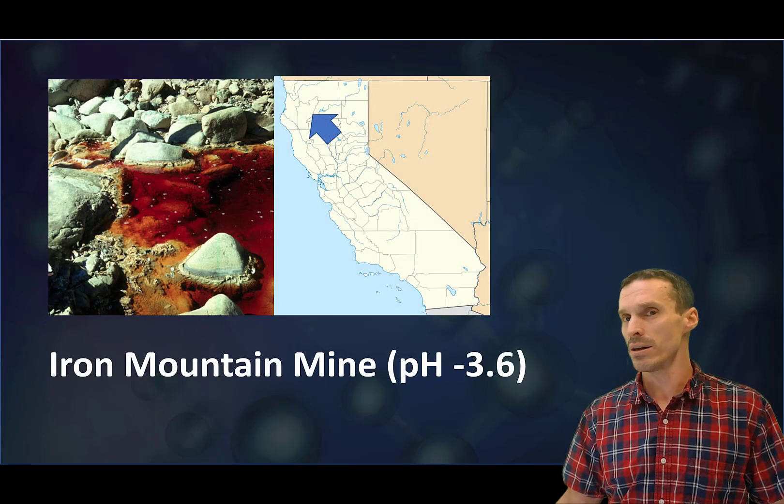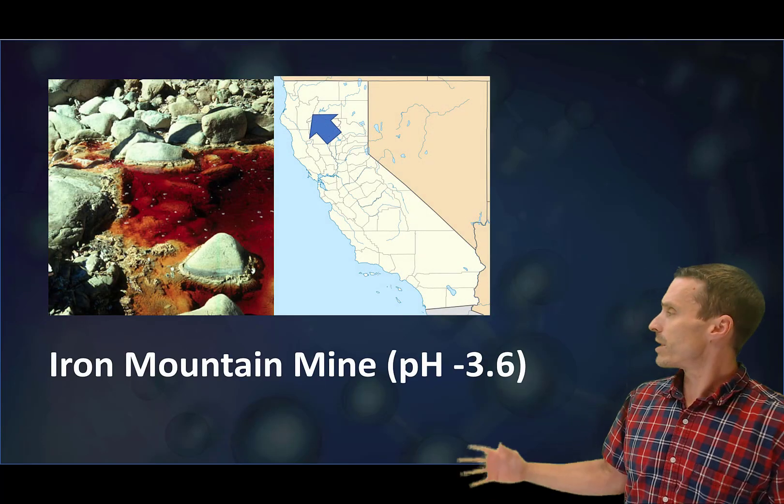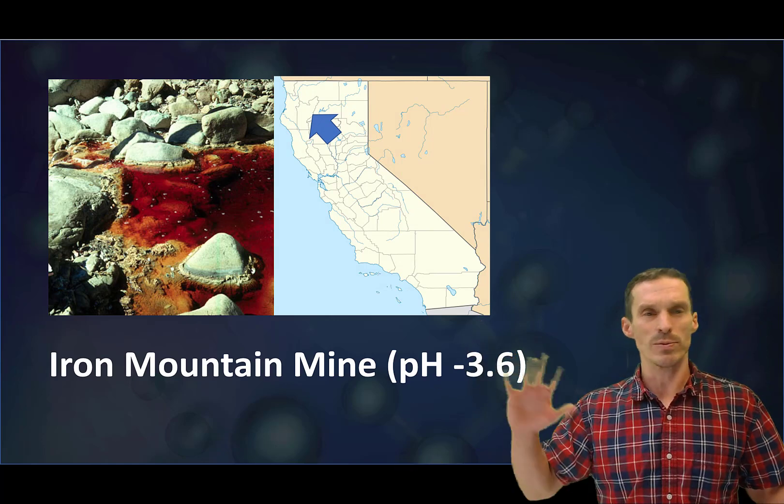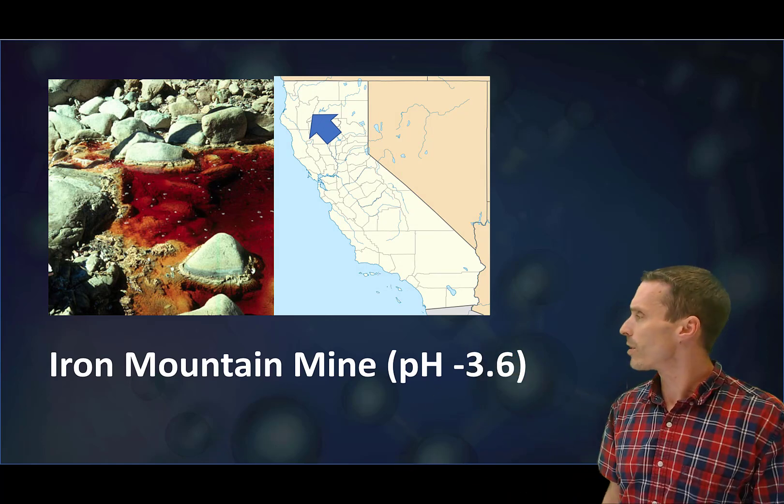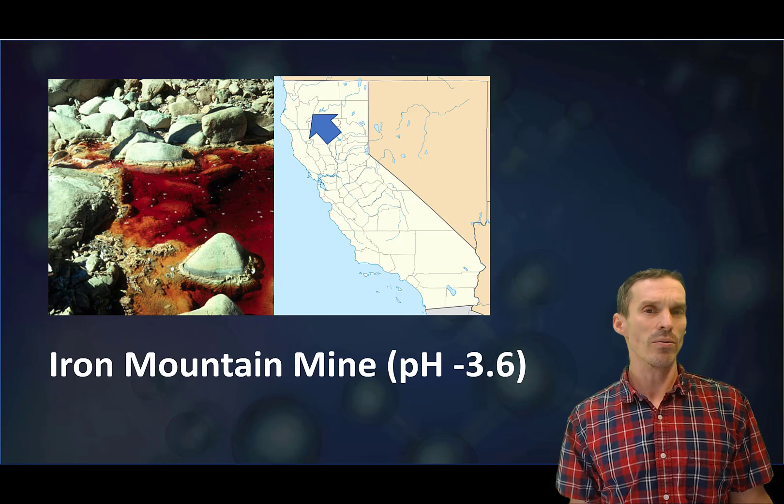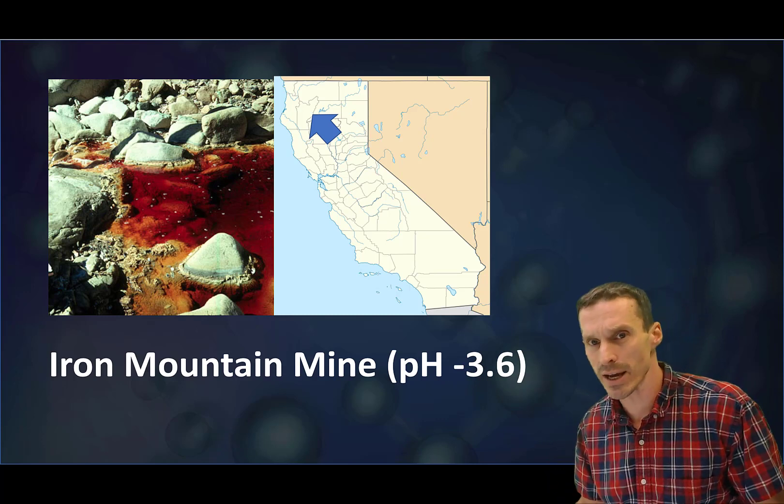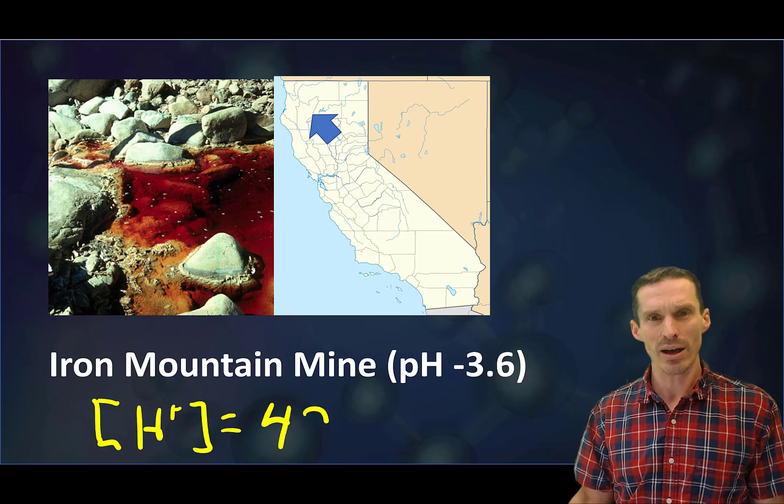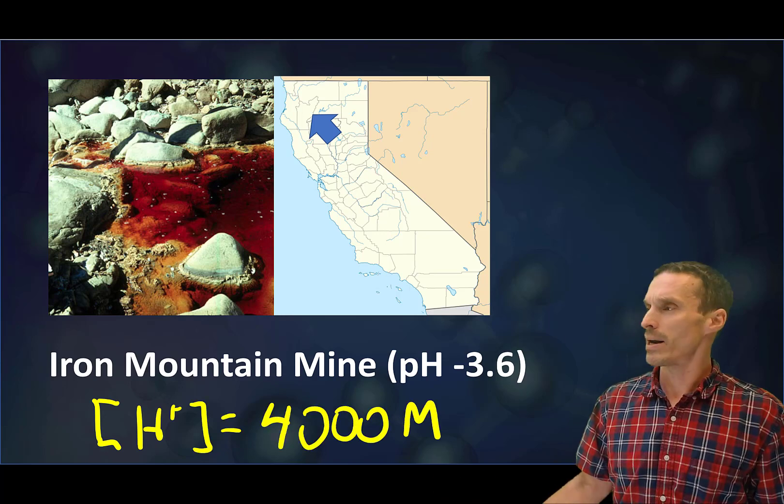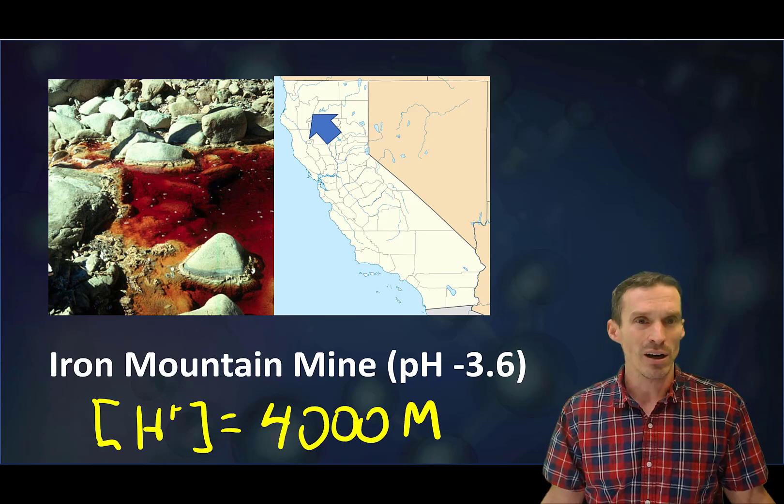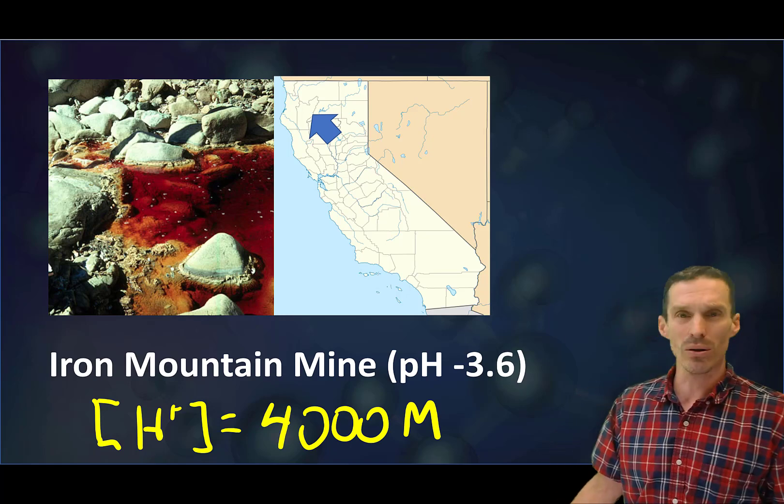But that's not nearly as low as it's gone. There's like a mine here, this is an iron mine that's been active for years and years in California. The pH of some of the water in there was recorded at minus 3.6.